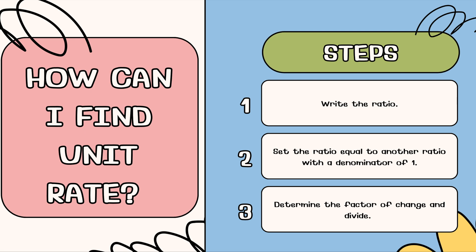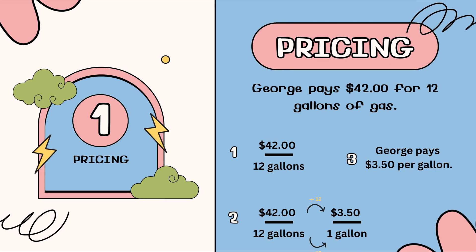How can I find the unit rate? First, you're going to write the ratio. Then you're going to set the ratio equal to another ratio with a denominator of one. The third step is to determine the factor of change and divide. Let's take a look at what I mean by this.